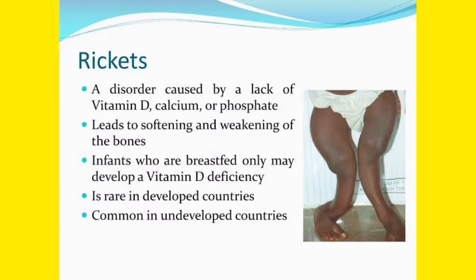Rickets is a disorder caused by deficiency or lack of vitamin D, calcium, or phosphate. This deficiency leads to softening and weakening of bones. Infants who are exclusively breastfed can also develop vitamin D deficiency. You can see in the picture the bowing of the legs, which can be found in rickets.